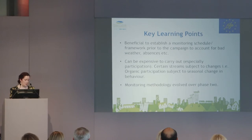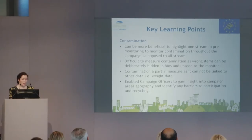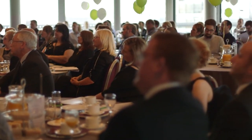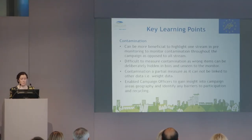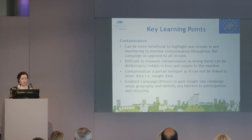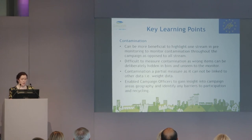As a result of the changes made in the second phase, the monitoring in phase two was very much an evolution. For contamination monitoring, we find that it can be more beneficial to highlight one stream in pre-monitoring to monitor contamination throughout the campaign as opposed to all streams. Contamination can be difficult to measure as wrong items can be deliberately hidden in bins and can be unseen to the monitor. Contamination monitoring itself is a partial measure and cannot be linked to other data such as weight data. However, this monitoring enabled officers to gain an insight into the campaign area's geography and identify any barriers to participation and recycling.